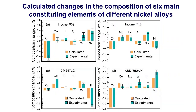Calculated changes in the composition of six main constituting elements of different nickel alloys — Inconel 939, Inconel 718, CM247LC, and ABD850AM — were compared with the corresponding experimental data during laser powder bed fusion. The predicted values have been compared with the experimental composition changes, and the computed composition change values agree well with the corresponding experimental data.